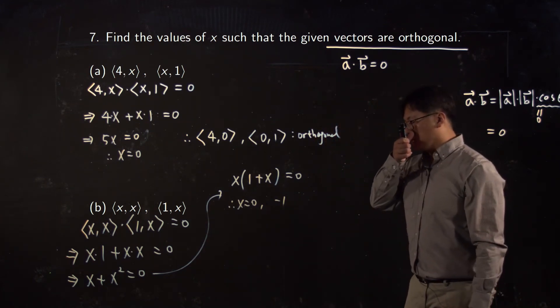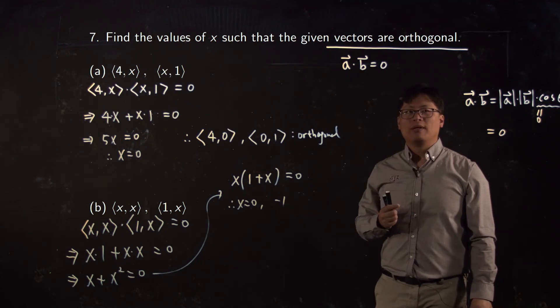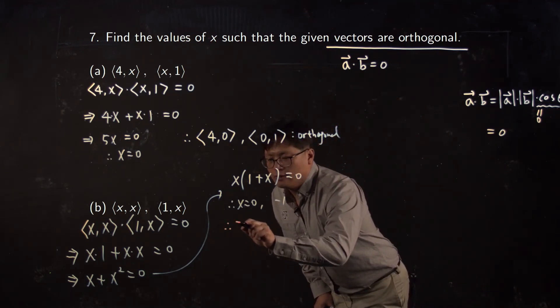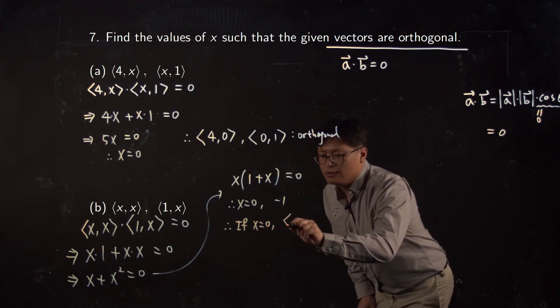negative one. So in other words, when x equals zero or negative one, your two vectors will be orthogonal.